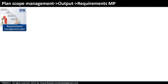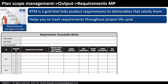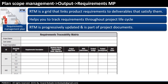What is RTM? The requirements traceability matrix (RTM) is a grid that links product requirements to the deliverables that satisfy them. Requirements descriptions are linked to business needs and project objectives, and may also contain the name of the stakeholder who provided that requirement. RTM helps the project manager and business analyst track requirements throughout the project lifecycle. RTM is progressively updated and is a part of project documents. For example, when a product is designed, requirements will be linked to design elements, or the RTM will be updated marking that requirements are already considered in the design.